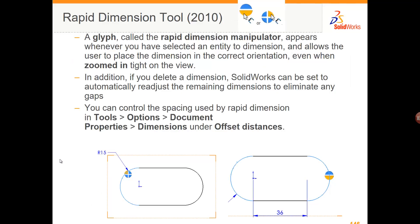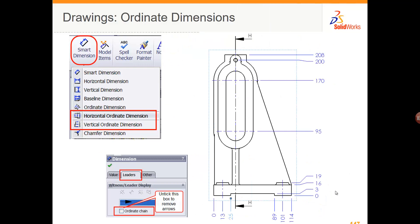Another option for dimensioning drawings is the Rapid Dimension tool. When you use this, a glyph appears — shown here for a radial dimension and for linear dimensions — and you can use the Tab key to flip which side you want the dimension to go on in your drawing. Another option for complicated drawings is datum dimensioning, with vertical and horizontal ordinates, available as part of the Smart Dimension tool.